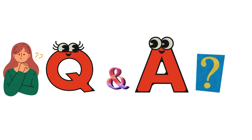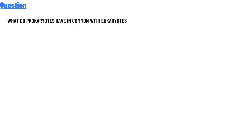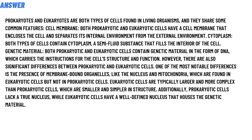Our question today is: what do prokaryotes have in common with eukaryotes? The correct answer is that prokaryotes and eukaryotes are both types of cells found in living organisms, and they share some common features.